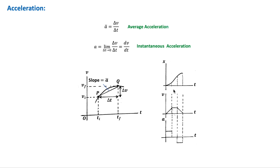For the first interval, velocity is increasing at a constant rate — constant acceleration. For the second interval, velocity is constant and acceleration is zero. For the third interval, velocity is decreasing and acceleration is negative. The acceleration curve is the derivative of the velocity curve, and the velocity curve is the derivative of the position curve. Conversely, the position is the integral of velocity, and velocity is the integral of acceleration.